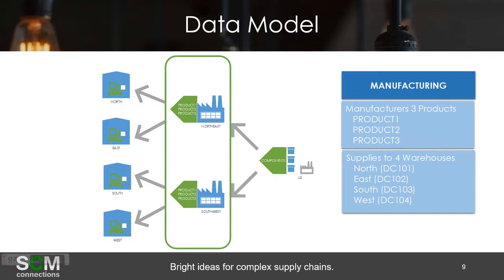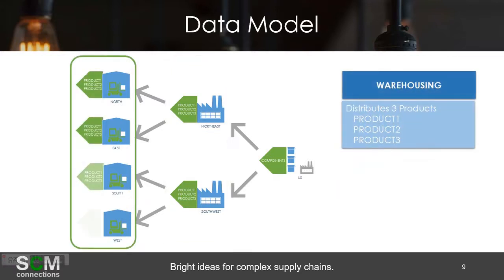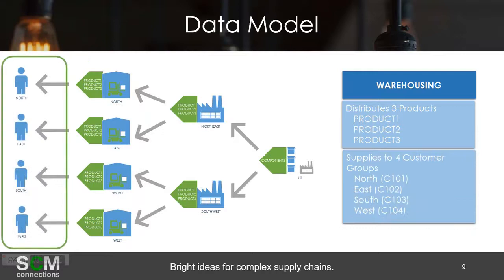Conveniently named Northeast, South, and West. Those warehouses will distribute — not manufacture — products 1, 2, and 3 to their respective customer groups: Northeast, Southwest, C101 through C104.